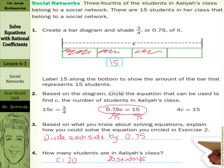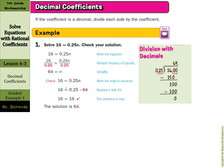Part of rational coefficients will be decimal coefficients. So if the coefficient is a decimal, divide each side by the coefficient. Solve 16 equals twenty-five-hundredths n, and check your solution. We're going to divide both sides by twenty-five-hundredths, and 16 divided by twenty-five-hundredths is 64.